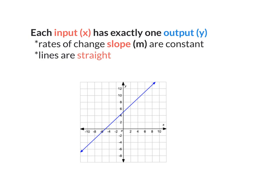We are going to be focusing on linear functions. Each input x has exactly one output y. The rate of change — slope m — is constant, which makes it a straight line.